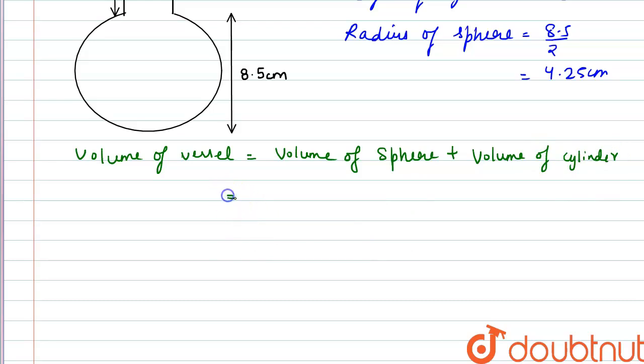And we know that the formula for volume of the sphere is 4 by 3 pi r cube plus the volume of the cylinder is pi r square h.